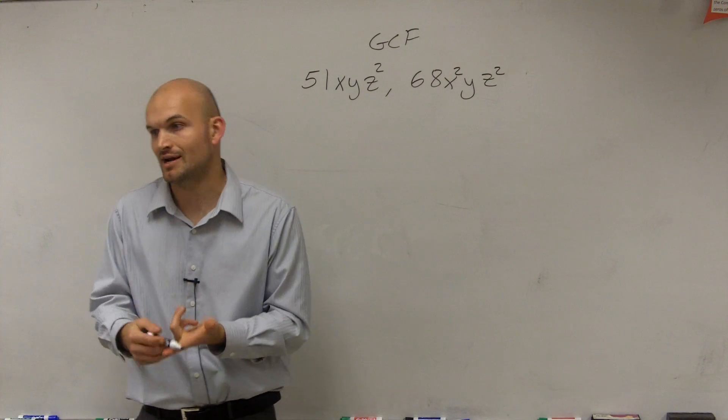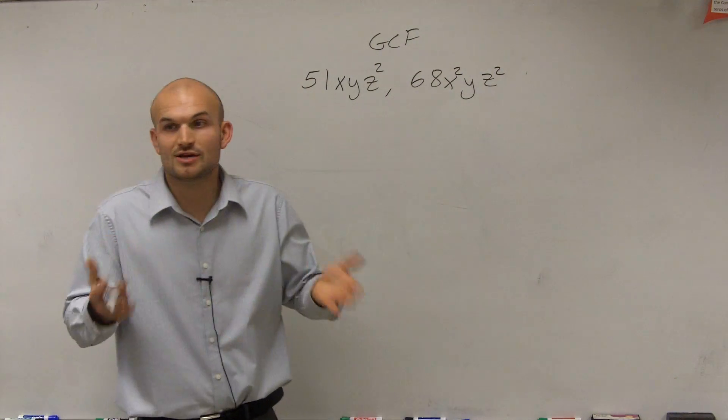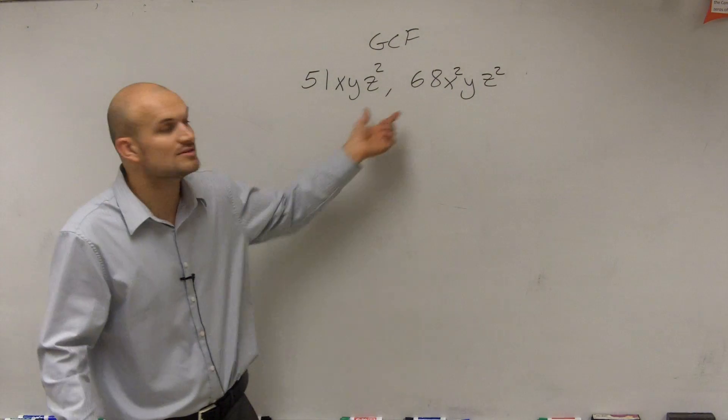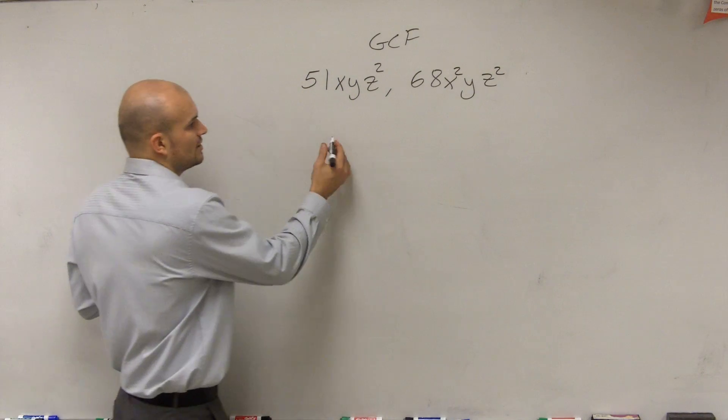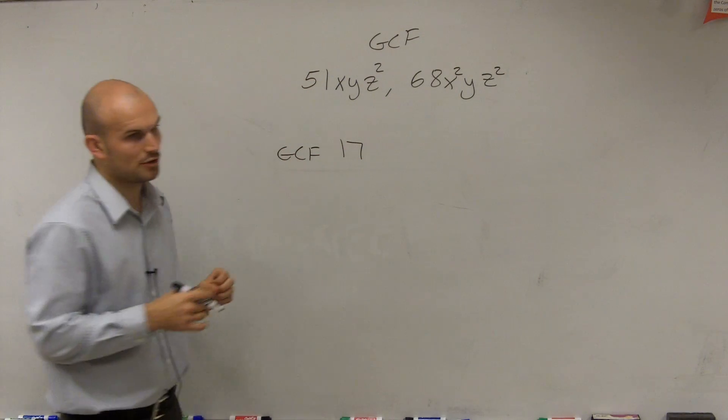No. Then you can do three. Does three divide into both of them? No. Then you can just keep on working your way up, or you can also just work on higher numbers and then work down and see what is the largest number that divides into both of them. And when you do your work, you can figure out that 17 is the largest number that divides into both of those terms.